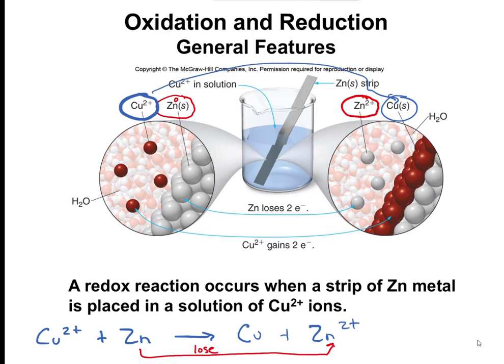Going from copper 2+ to copper solid — that copper has a charge of zero on it. It's going from 2+ to zero, so copper is going to gain those two electrons. The electrons that zinc lost are transferred to the copper 2+ ion. When it gains one electron it goes to copper 1+, then when it gains a second electron it goes to copper zero — the copper solid. So copper gains two electrons, from Cu²⁺ to Cu.